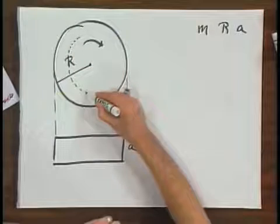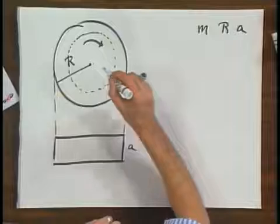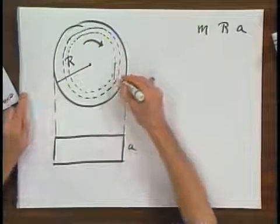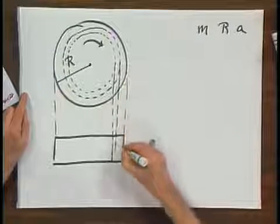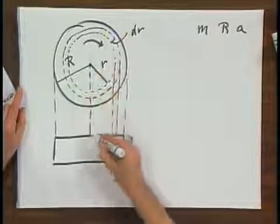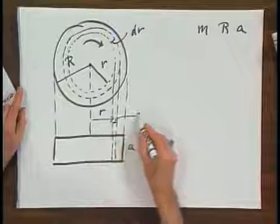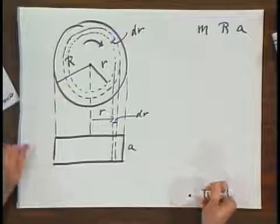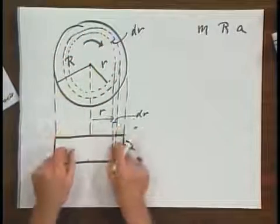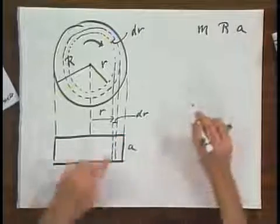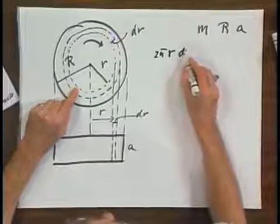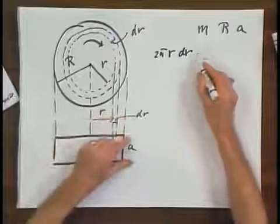In order to evaluate the moment of inertia about this axis of rotation, I devise here a very thin cylinder. This cylinder has a thickness dr and it has a radius r. So this is r and the thickness is dr. What is the volume of this ring? The volume is 2πr times dr — that's the surface of this ring — multiplied by A. That's the volume.